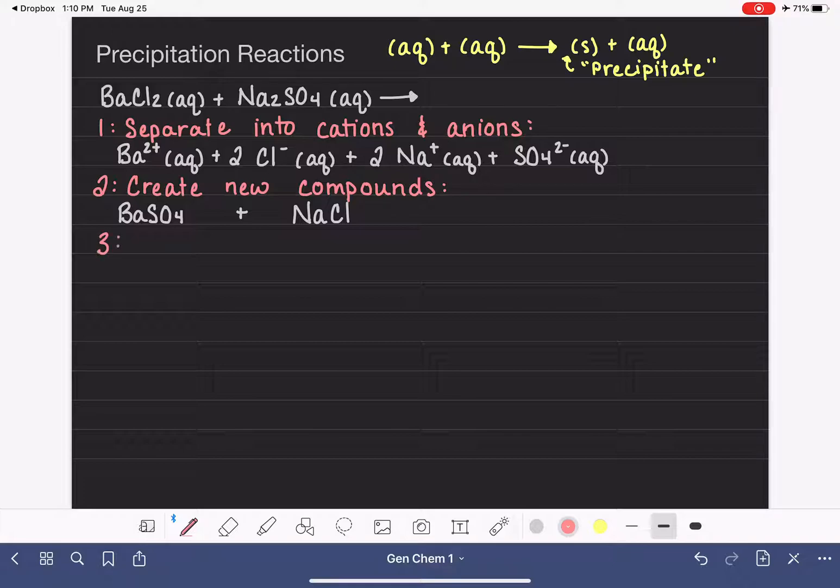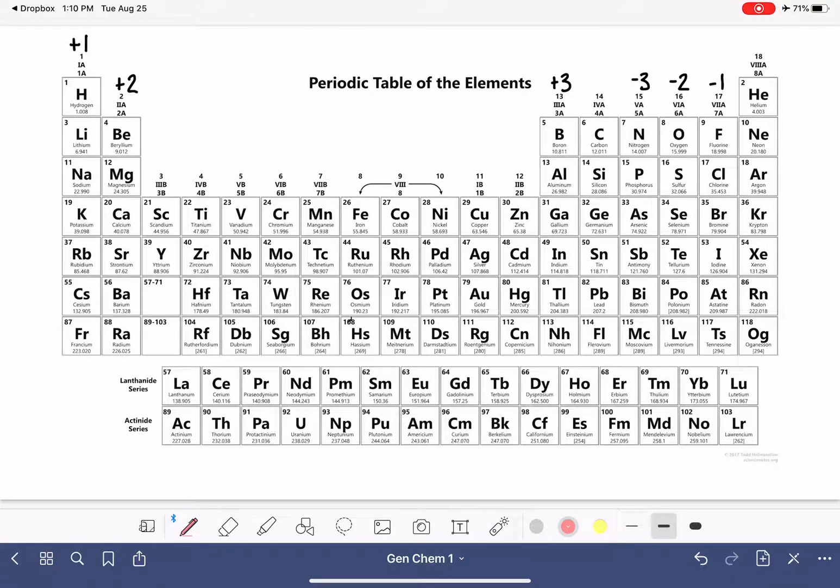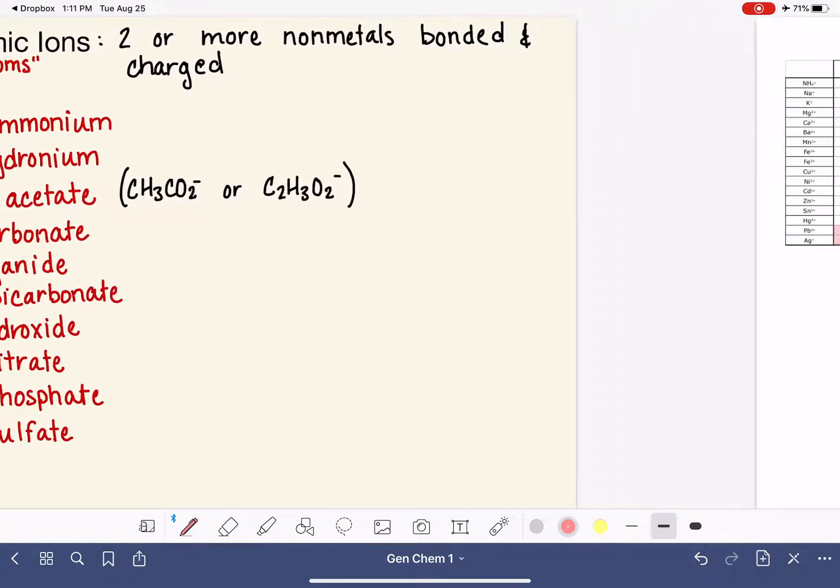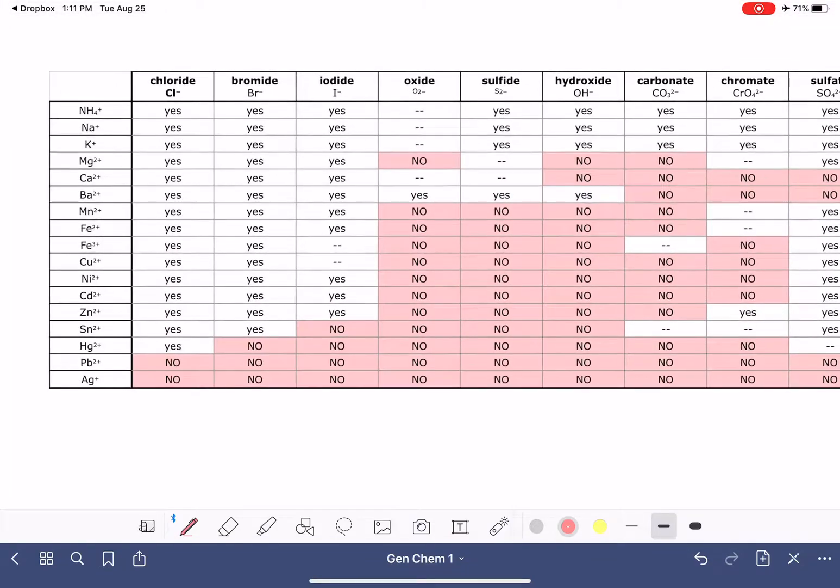And the last thing that we need to do is check what we call the solubility rules. We're going to use the solubility rules to determine if our products that we just picked in step two, to determine if our products are solid or aqueous. Now, there's a few different versions of solubility rules out there, and a lot of them look really different from each other, but they all give the same information. So the solubility rules that I'm going to be using in this video are ones that are set up in a table like this. And to use a set of solubility rules like this, you just simply find the two components of your compound.